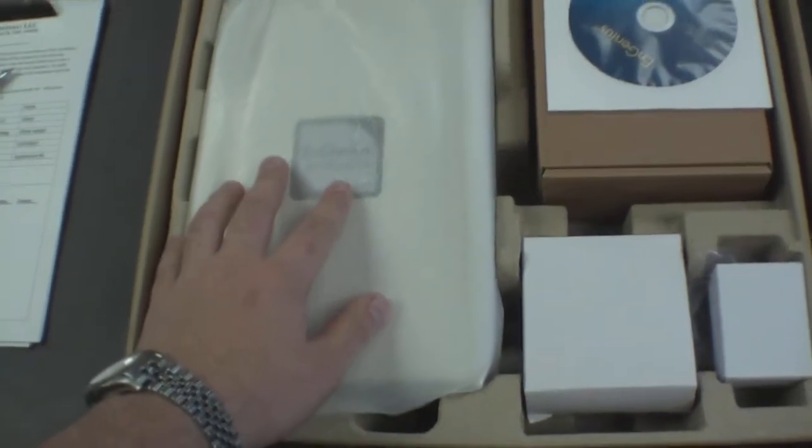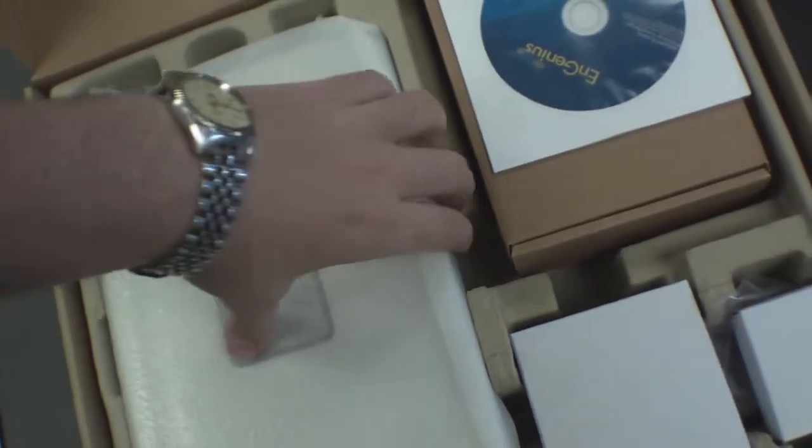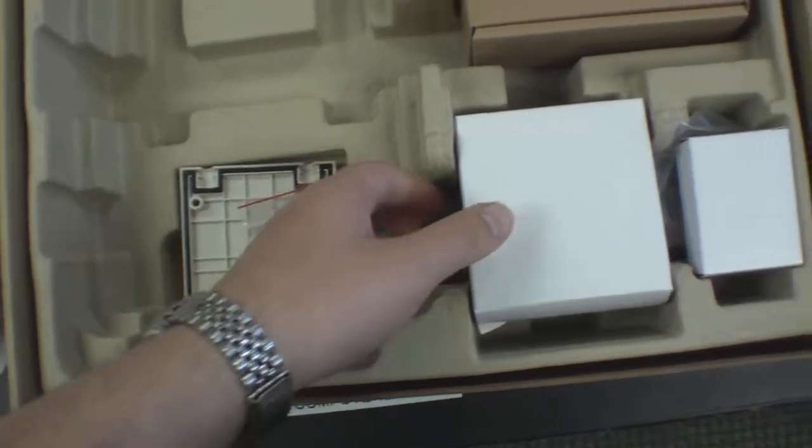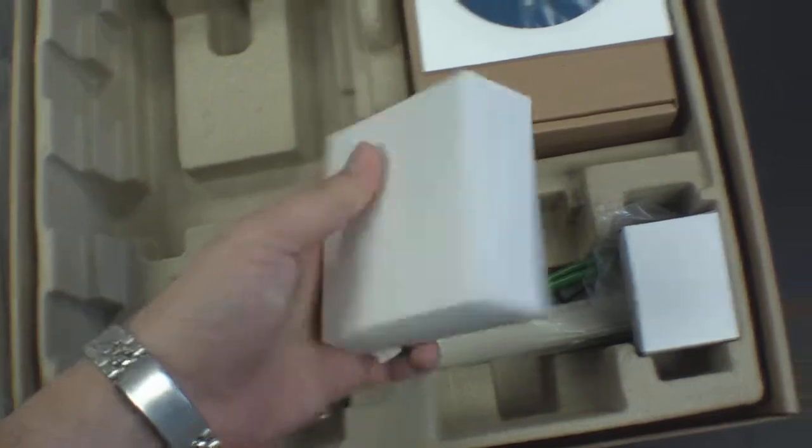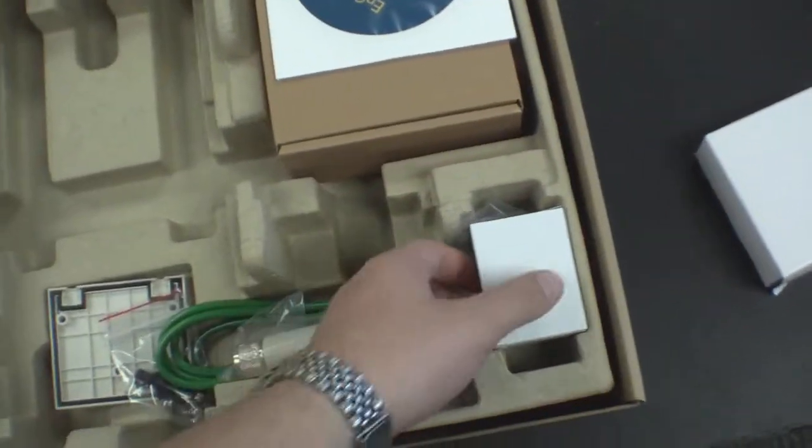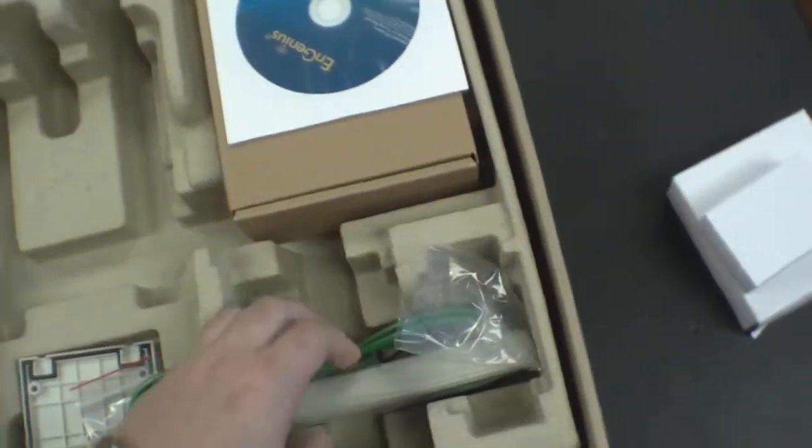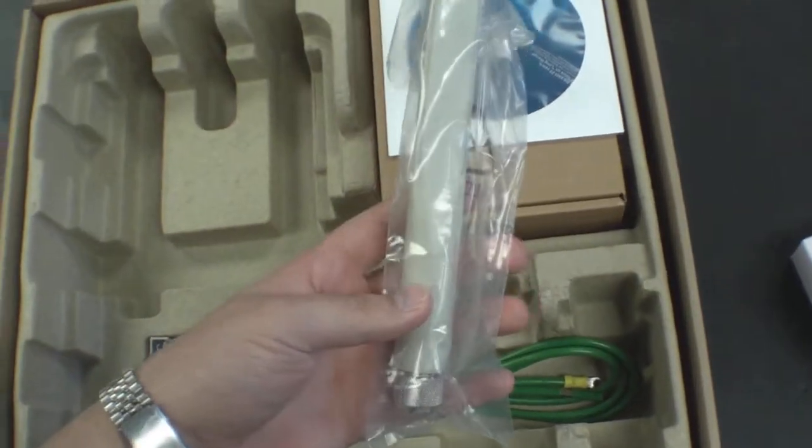And these are the box contents. You can see the device here. And here is probably the power brick, the power over ethernet injector, and the external antenna.